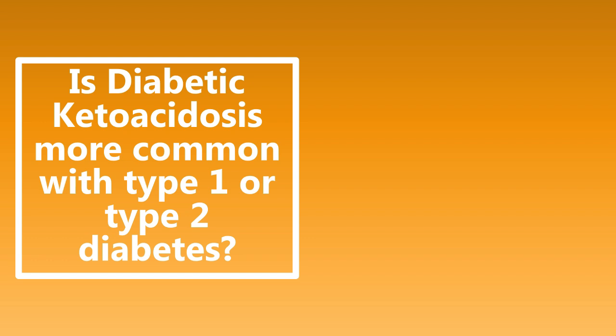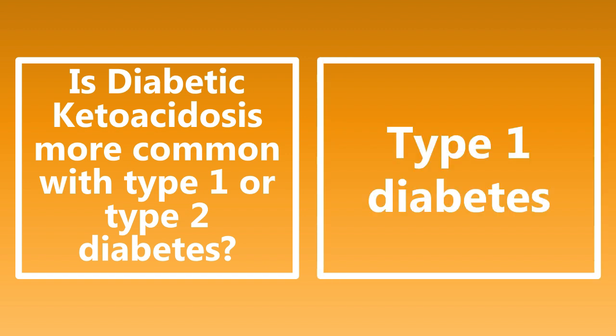Is diabetic ketoacidosis more common with type 1 or type 2 diabetes? It's important to know the distinctions between severe conditions in type 1 and type 2 diabetes. Diabetic ketoacidosis is more common in type 1 diabetes. HHS — the hyperglycemic hyperosmolar state — on the other hand, is more common in type 2 diabetes.